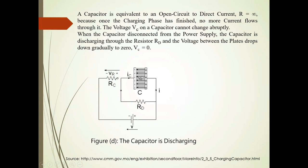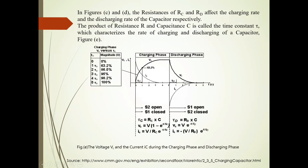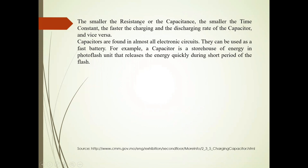As shown in figures C and D, the resistances RC and RD affect the charging rate and discharging rate of the capacitor respectively. The product of R and C is called the time constant τ, which characterizes the rate of charging and discharging of the capacitor. Smaller the resistance or capacitance, smaller the time constant, and the faster the charging and discharging rate of the capacitor, and vice versa.